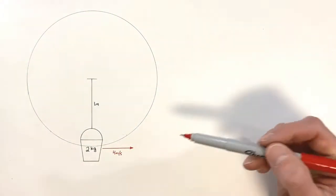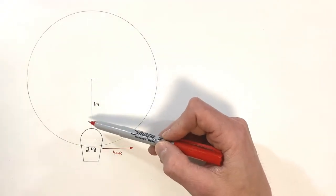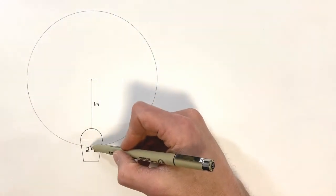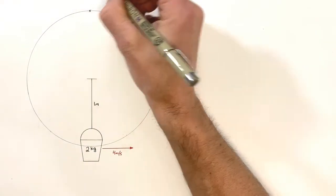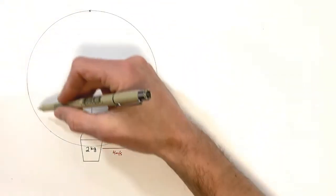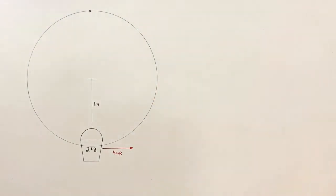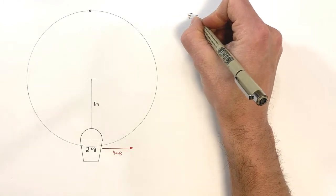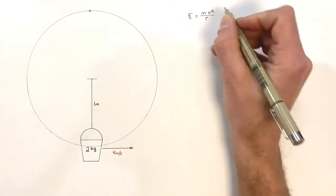We're going to work out the tension in this string at two different points: when the bucket is at its lowest point and when the bucket is at its highest point. Because this bucket is moving in a circle we need to worry about centripetal force, and centripetal force is given by the equation: centripetal force equals mass times velocity squared over the radius of revolution.